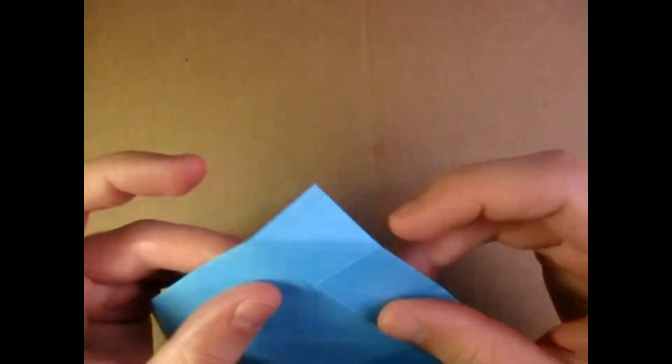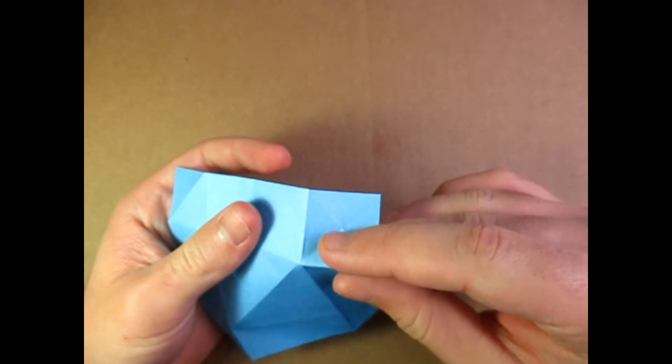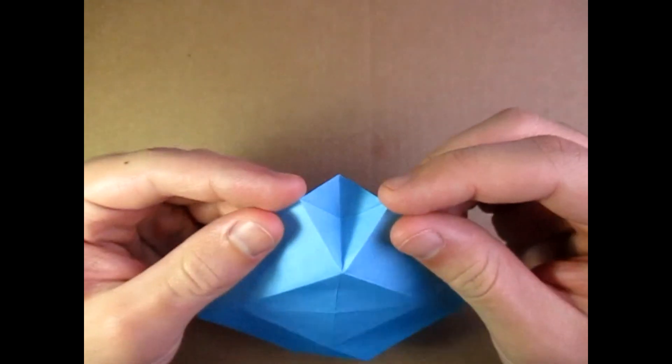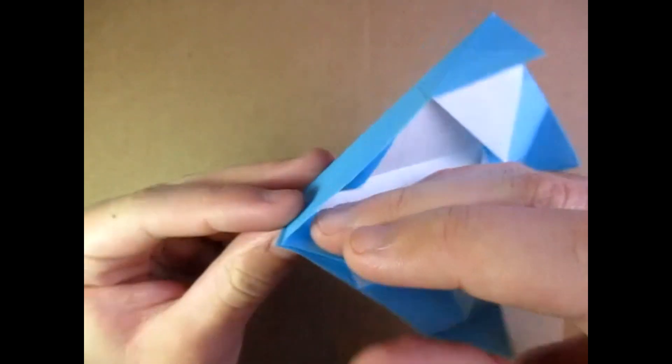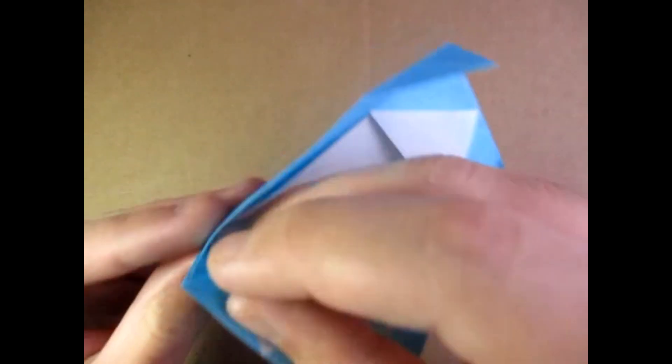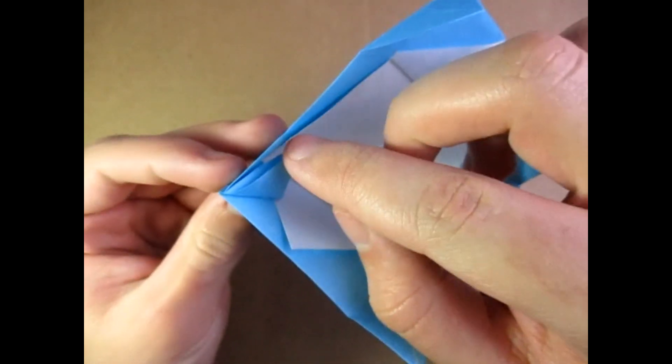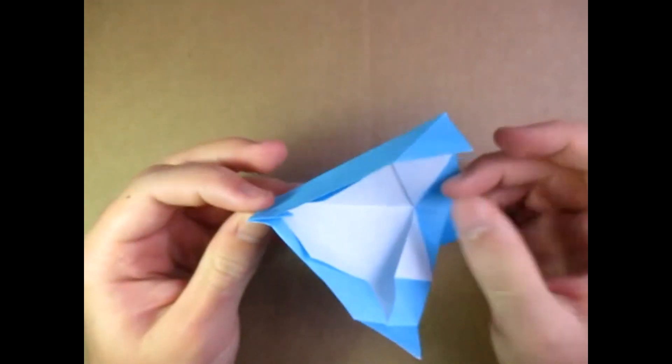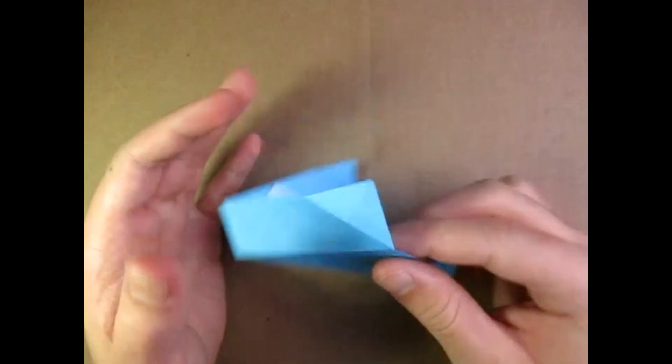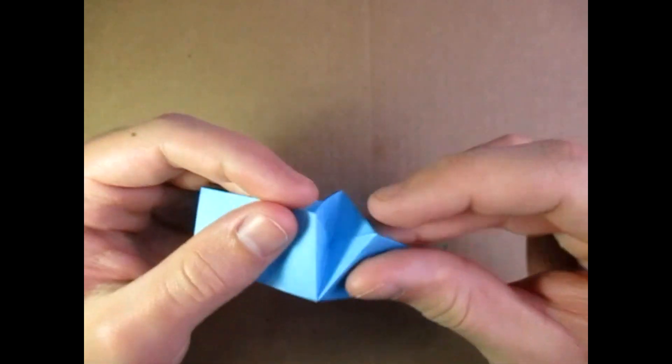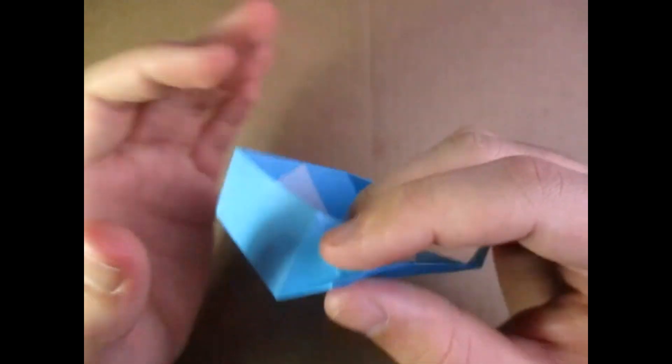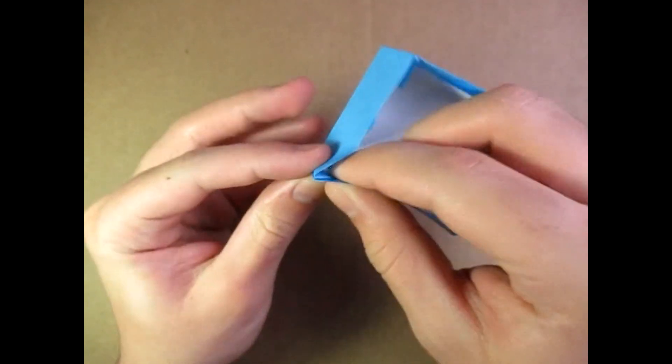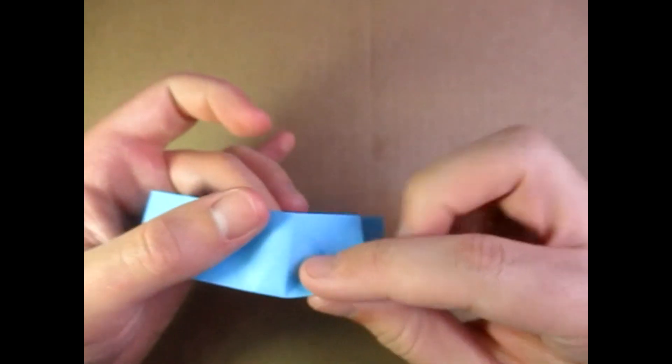Now unfold and now turn over. Now let's make those creases right here. We're going to bring these two points together like that and fold this in on the existing crease. There's an existing crease in there, you can be able to do it. Do that three more times. So bring these two points together, make sure that this creases a valley and this flap shows up in there, and fold it down on the existing crease.